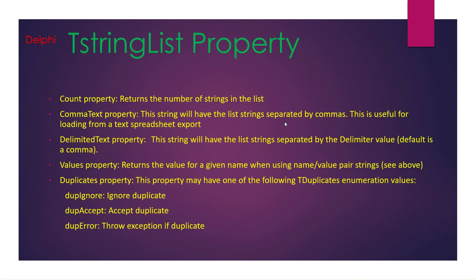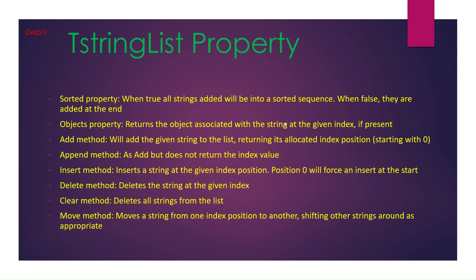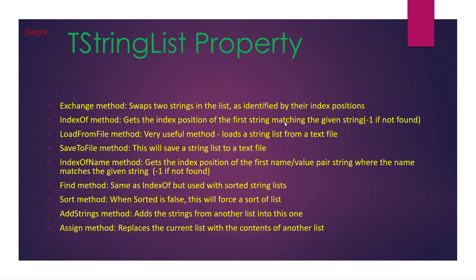Here I have mentioned a few important properties: the Count property, Text property, DelimitedText property, Values property, and Duplicates property. With the Duplicates property you can control duplicate behavior — it can ignore duplicates, accept them, or throw an error. There is also the Sorted property, Objects property, and methods like Append, Insert, Delete, and Clear.